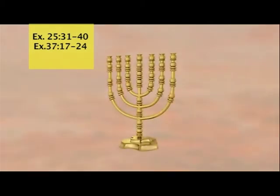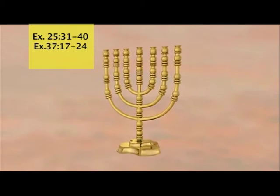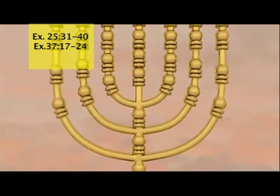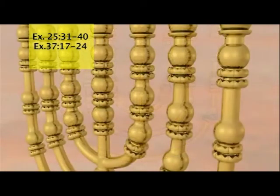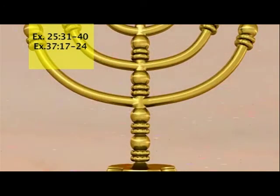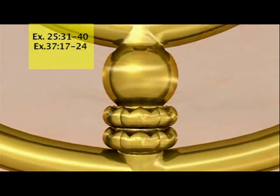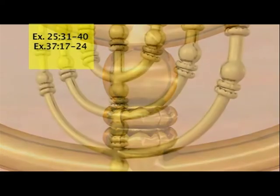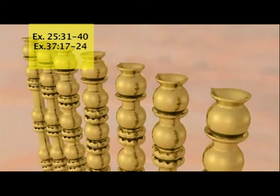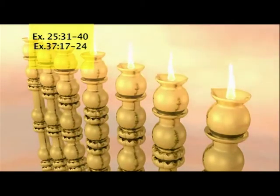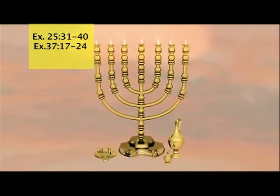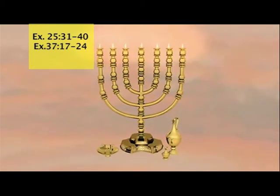Make a lampstand of pure hammered gold. The entire lampstand and its decorations will be one piece — the base, center stem, lamp cups, buds, and blossoms. It will have six branches, three going out from each side of the center stem. Each of the six branches will hold a cup shaped like an almond blossom, complete with buds and petals. The center stem will be decorated with four almond blossoms, and all decorations and branches must be one piece with the stem, hammered from pure gold. Then make the seven lamps and set them so they reflect their light forward. You will need seventy-five pounds of pure gold for the lampstand and its accessories.